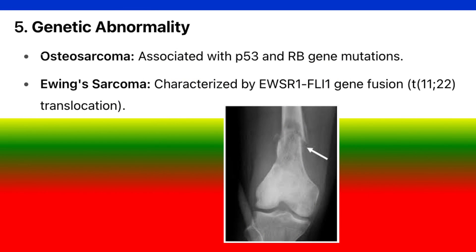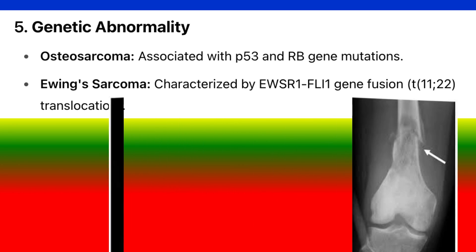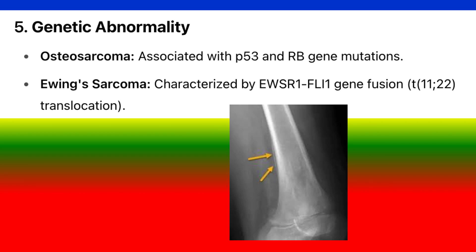5. Genetic abnormality. Osteosarcoma: associated with P53 and RB gene mutations. Ewing's sarcoma: characterized by EWSR1-FLI1 gene fusion, t(11;22) translocation.